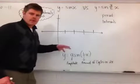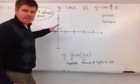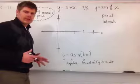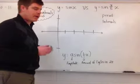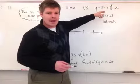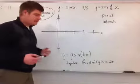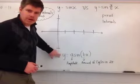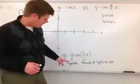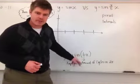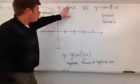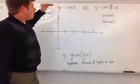We're going to talk about how to graph a trigonometric function with a period change. We've been talking in class about how you graph the regular y equals sine of x, so we're going to compare y equals sine of x versus y equals sine of three-fifths x. This comes back to the form y equals a times sine of bx, where a is your amplitude and b is the amount of cycles in two pi.